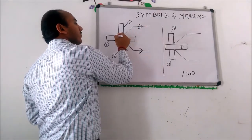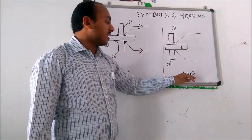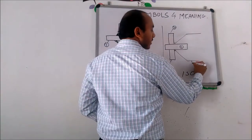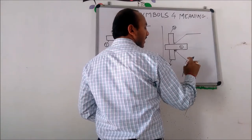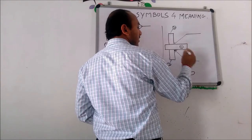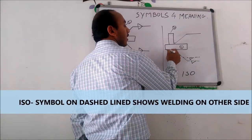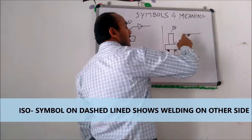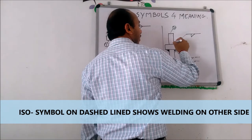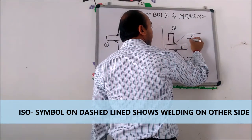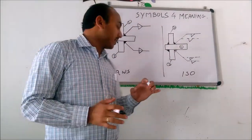In the ISO standard, for the weld on the arrow side, the symbol will be on the solid reference line. If you want to give a weld on the other side, there will be a dash line and you provide the welding symbol on that dash line. So if you provide the symbol on the solid line it will be on the arrow side; if you provide the symbol on the dash line it will be on the other side. This is how it is interpreted in AWS and ISO standards.